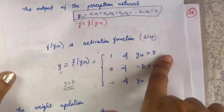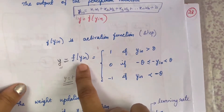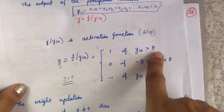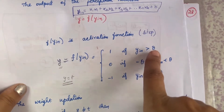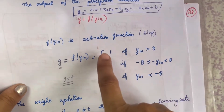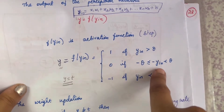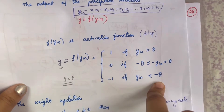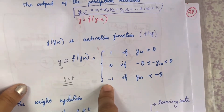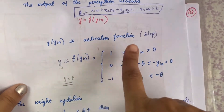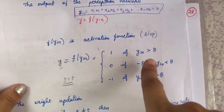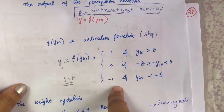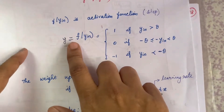After calculating y_input, you apply the activation function f(y_input) to get y. The activation step function is defined as: f(y_input) = 1 if y_input is greater than some threshold θ; f(y_input) = 0 if y_input is between −θ and +θ; and f(y_input) = −1 if y_input is less than −θ. That is your output value from the activation function.